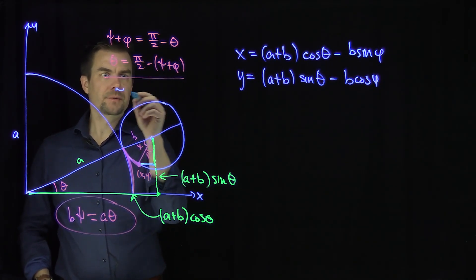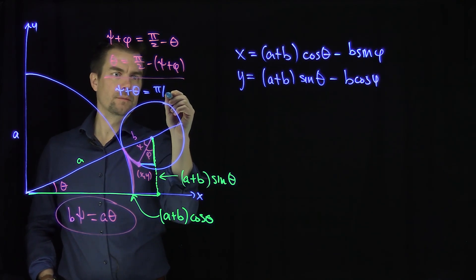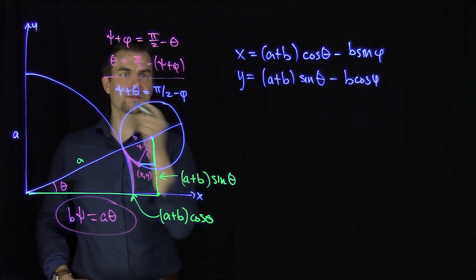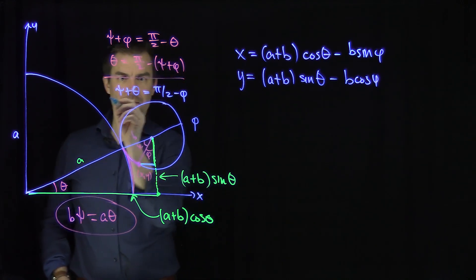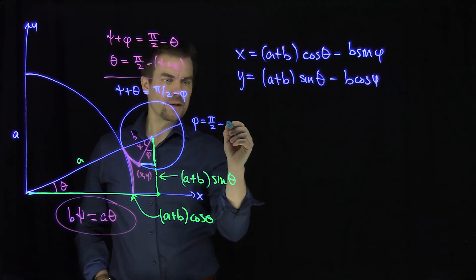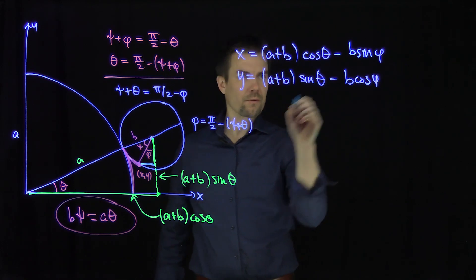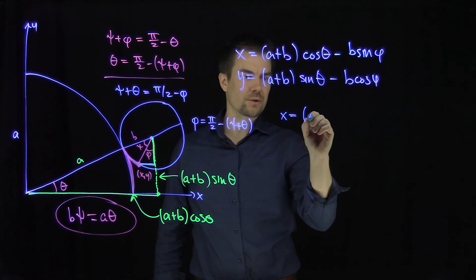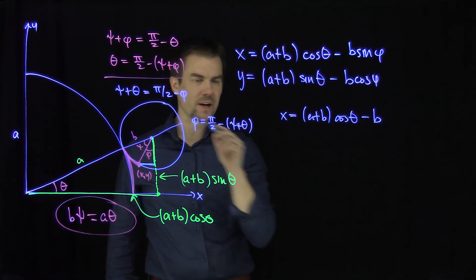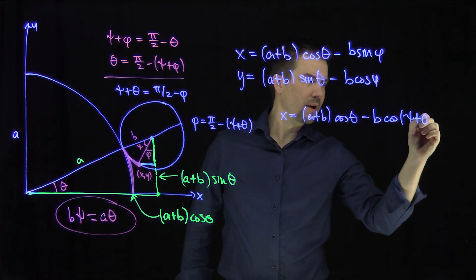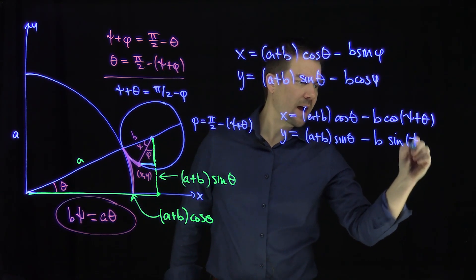So I can write down that psi plus theta is equal to pi over 2 minus phi. Therefore, solving for phi, I can conclude that phi is equal to pi over 2 minus psi plus theta. Since phi is a co-angle, the sine of phi turns into cosine. So I can change these equations to: x equals a plus b cosine theta minus b times cosine of psi plus theta. And y will be a plus b sine theta minus b times the sine of psi plus theta.